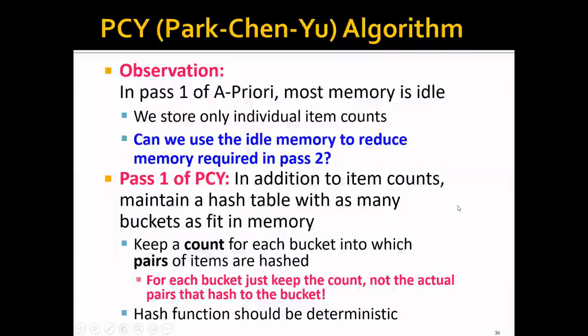One idea is that in addition to the item counts, we can maintain a hash table with as many buckets as fit in memory. We will keep a count for each bucket into which pairs of items are hashed. Note that each bucket corresponds to several pairs of items, and the value of each bucket is the sum of the total counts of all these pairs. For each bucket, we only keep the count, not the actual pairs hashed to the bucket. The hash function should be deterministic.